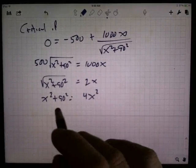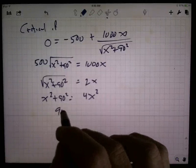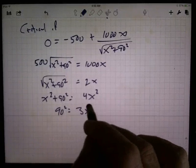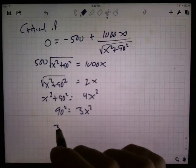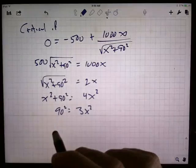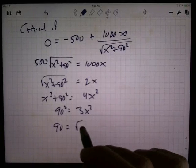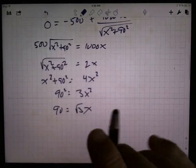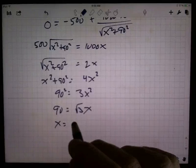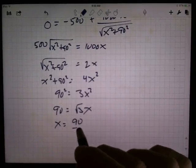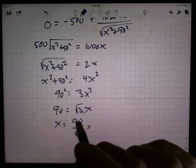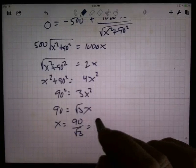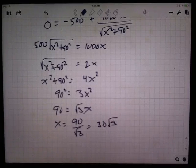So, 90 squared equals 3X squared. So, X is 90 divided by the square root of 3, which is, that's 30 times 3, so 30 times the square root of 3.